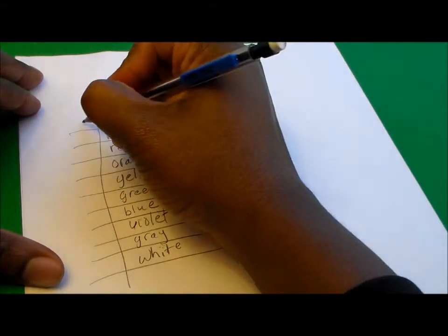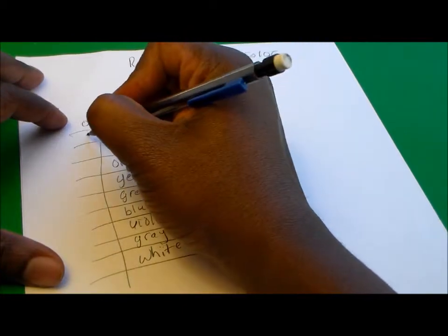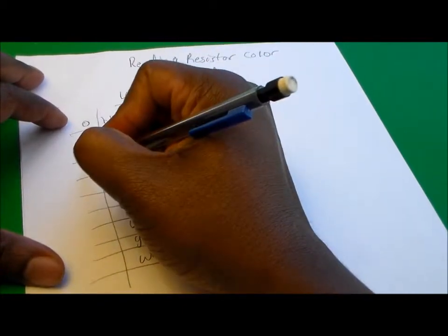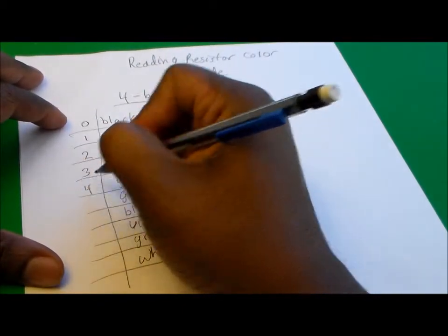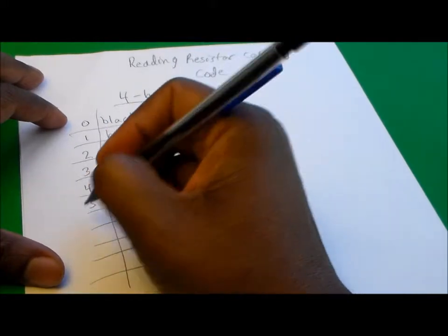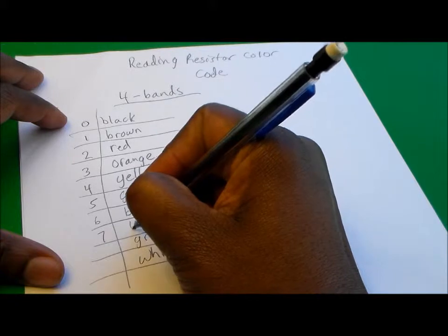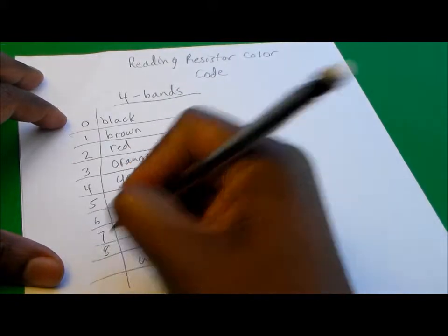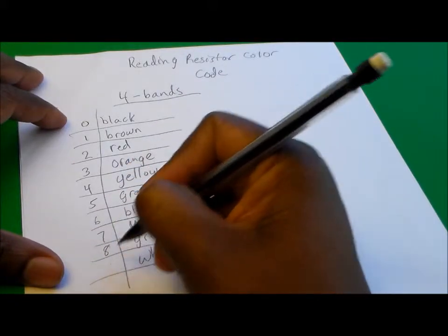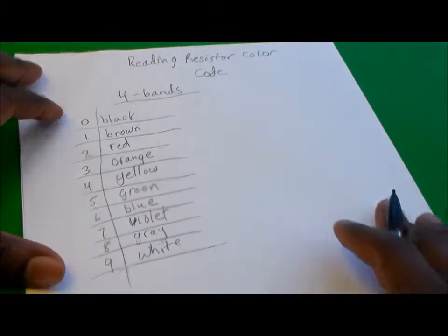Black is zero, brown is one, red is two, orange is three, yellow is four, green is five, blue is six, violet is seven, gray is eight, and white is nine.